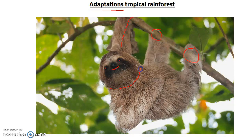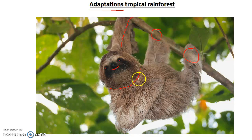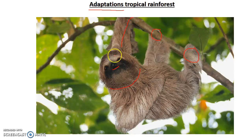This sloth has the ability to turn its head 270 degrees, which is good because it means it can watch out for predators and look out for its young too, giving it a good awareness of its surroundings.